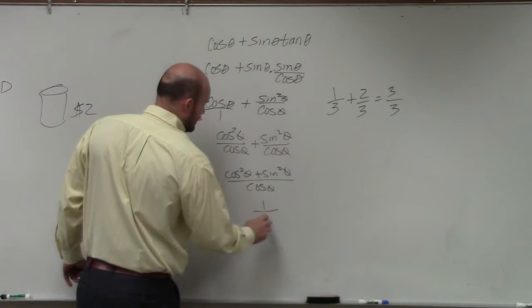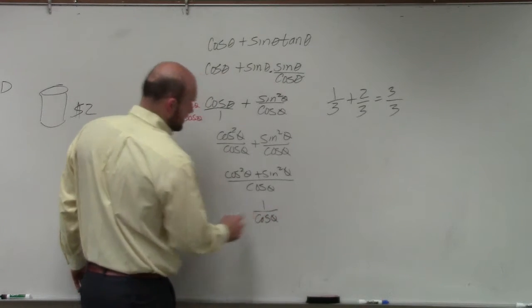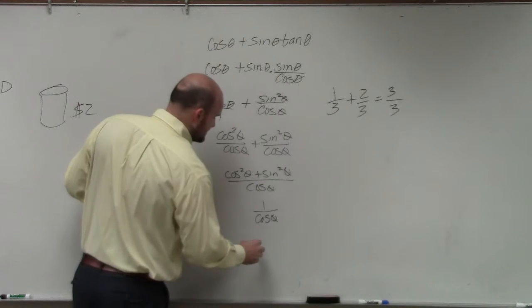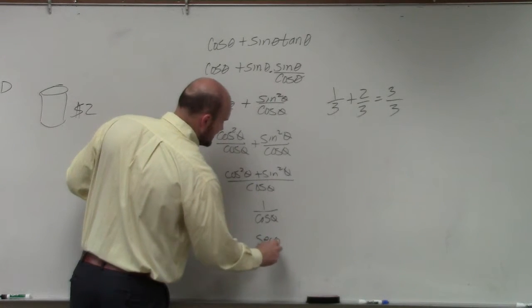So now I have 1 over cosine of theta, which I can rewrite as simply as, based on my identities, secant of theta.